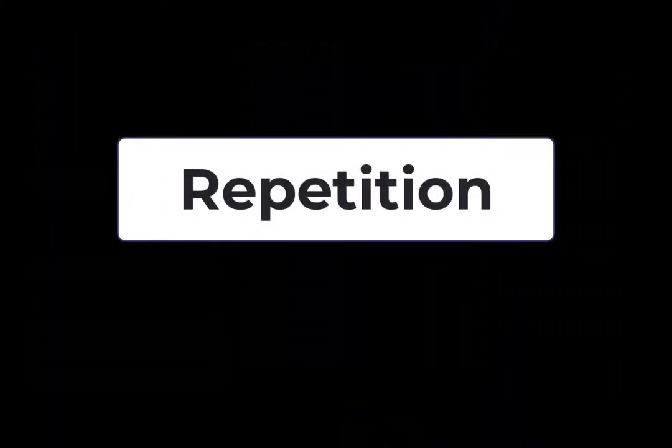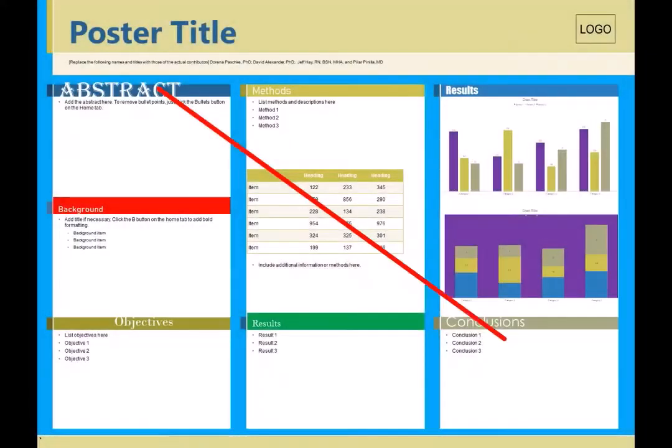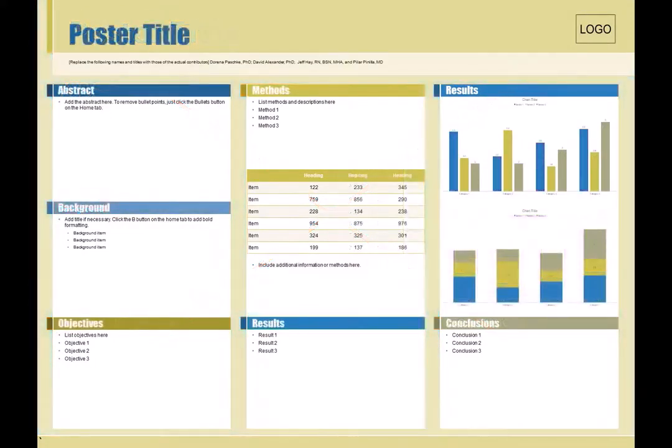Finally, you want your poster to be readable and have a cohesive appearance. Repeating aspects of the design throughout the poster, such as a bold font, a particular bullet point, color, or format, will help you achieve this.